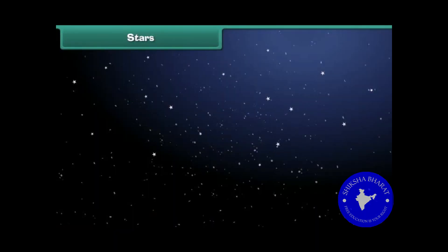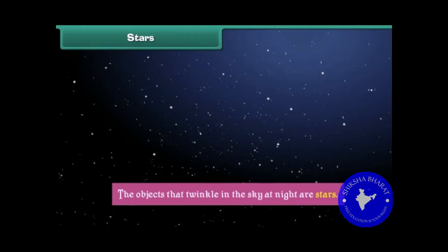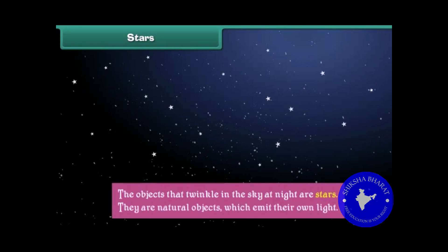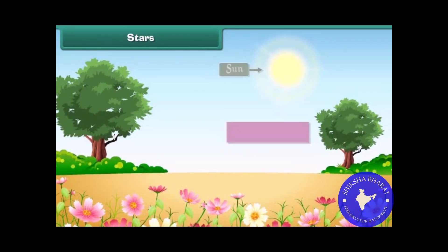The objects that twinkle in the sky at night are stars. They are natural objects which emit their own light. The Sun is also a star.